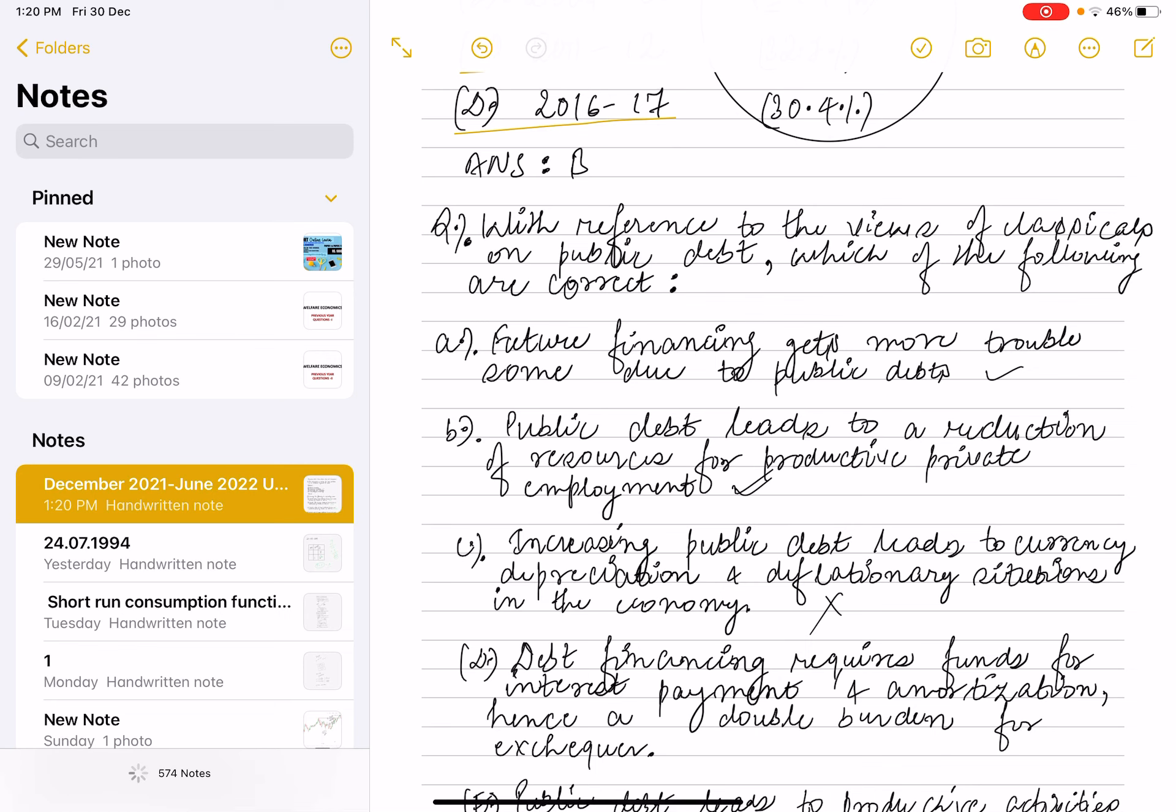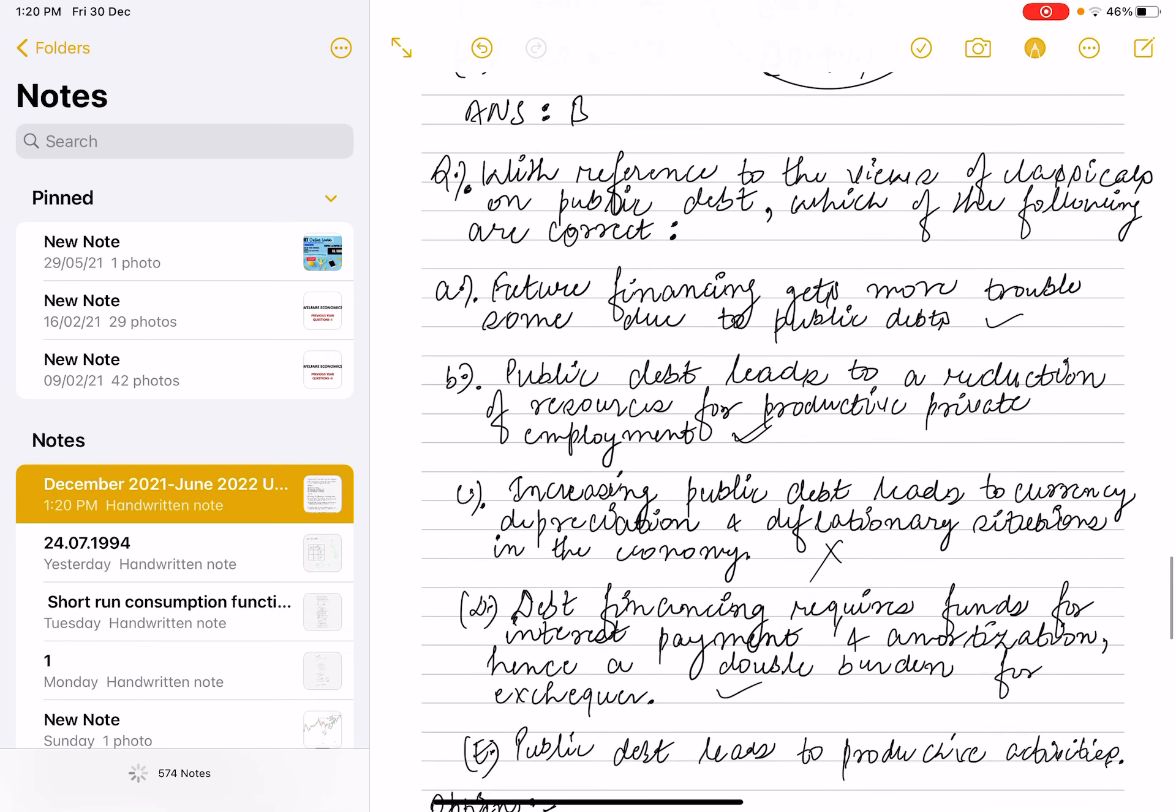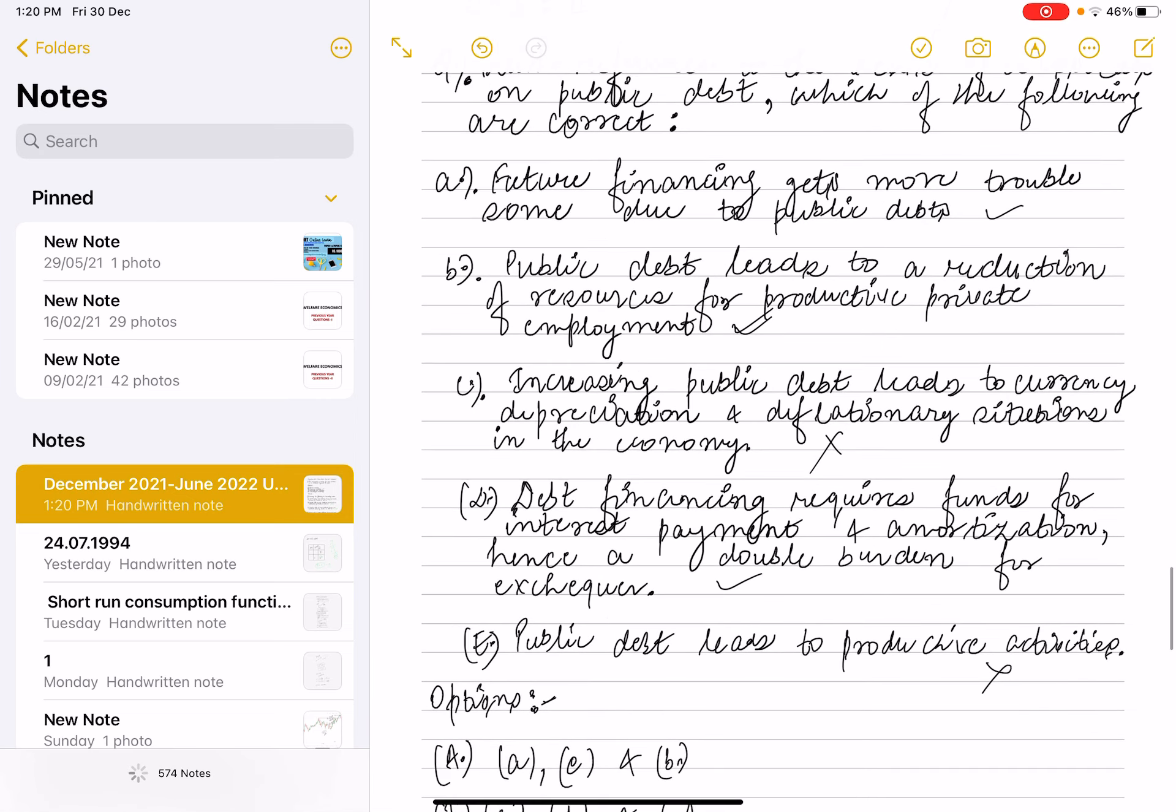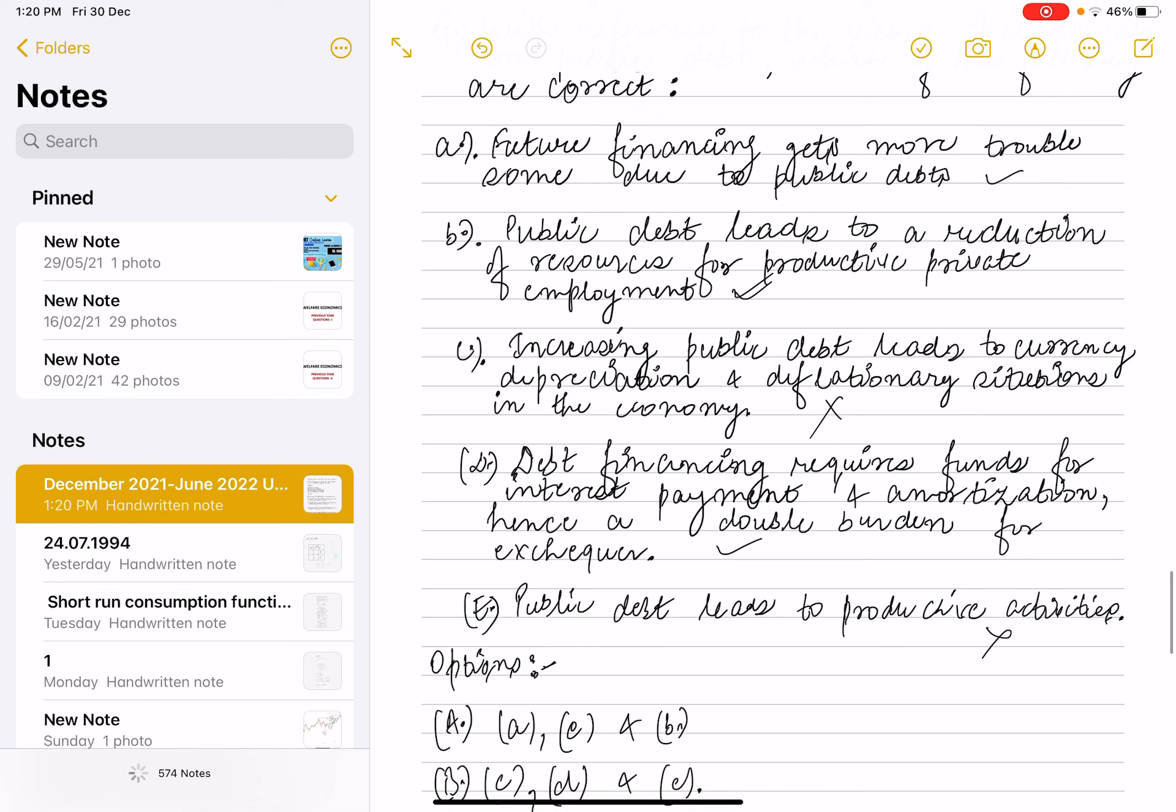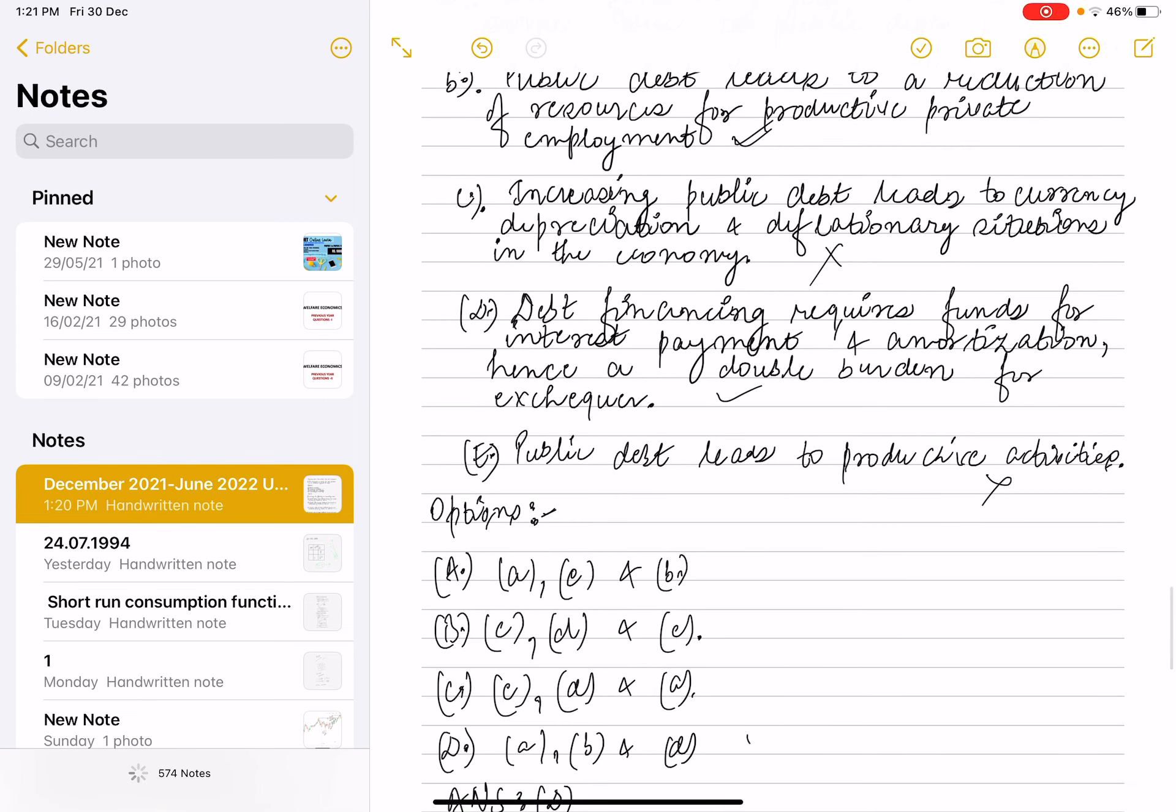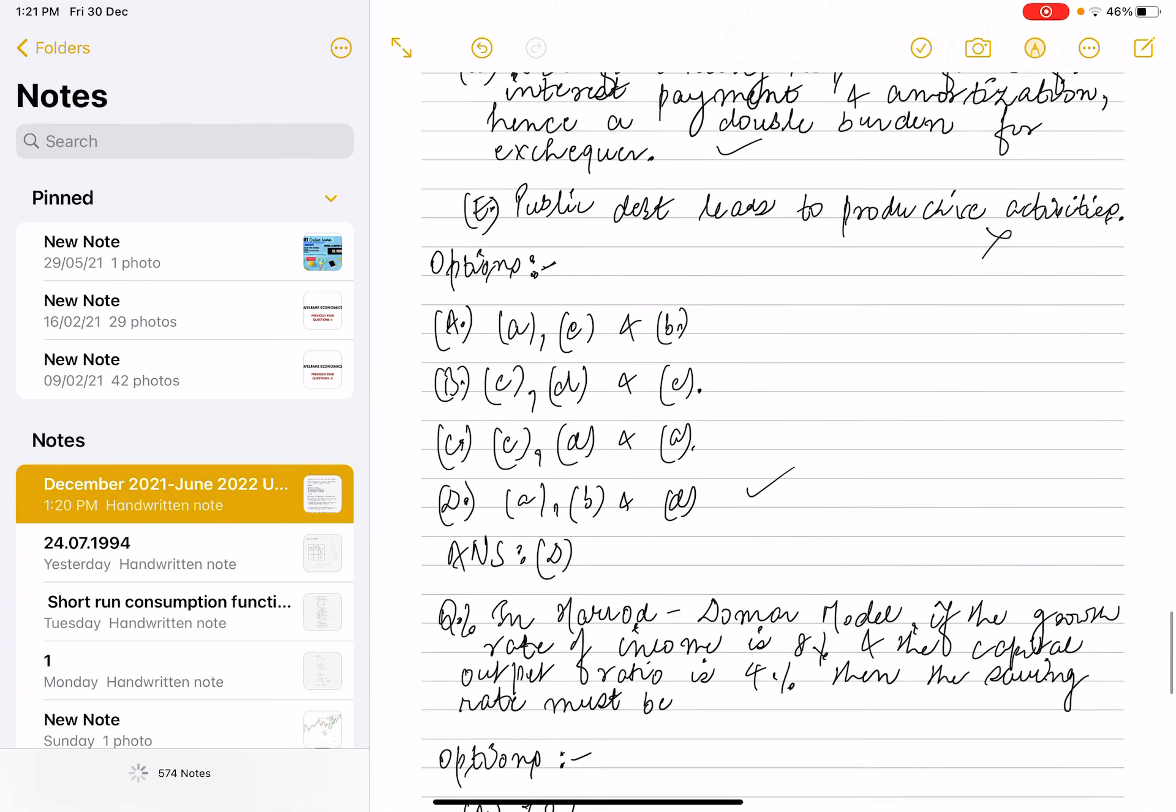Next is: public debt leads to productive activities - no, this is not the view as per classical economists on public debt. So accordingly, the correct option is A, B, D. Option D is the correct option.